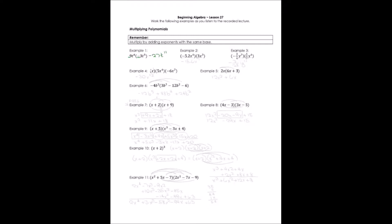Example 2, we do the same thing. Negative 5.2 times 3 gives us negative 15.6. Then x to the 4th times x to the 3rd — by adding the exponents — I get x to the 7th.